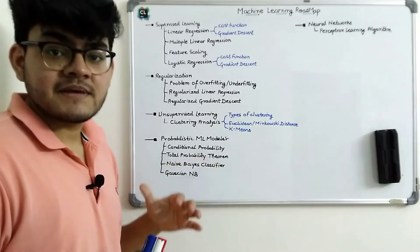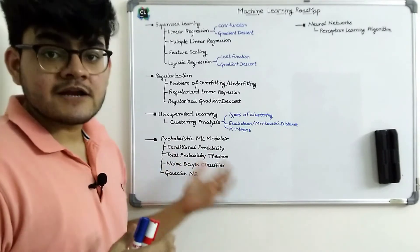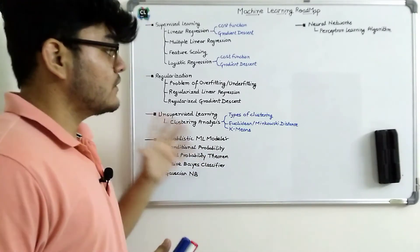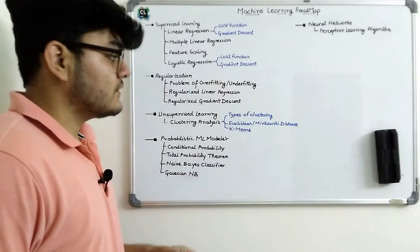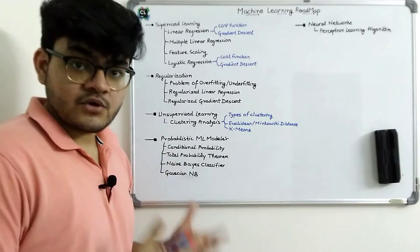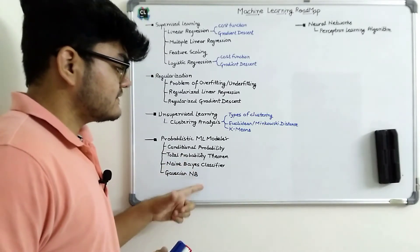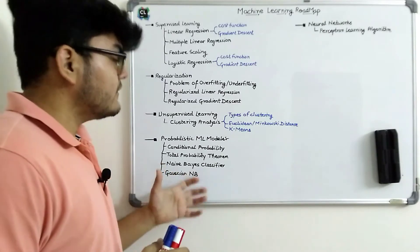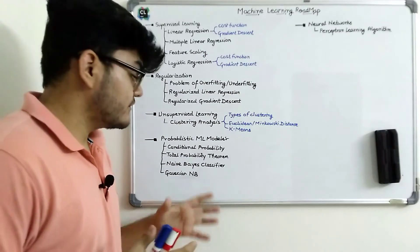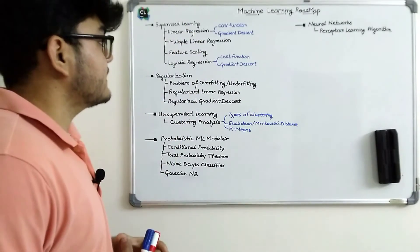Probabilistic models are based on probability, which I will cover later in the roadmap. Do not start with these because they will not give you an exact idea of how machine learning works and you will get confused. That's why I recommend starting from supervised learning.